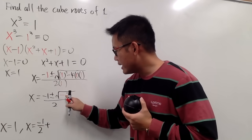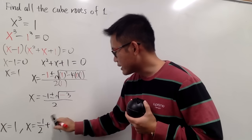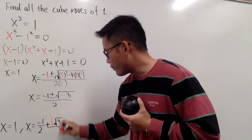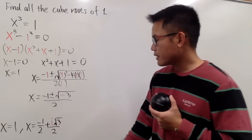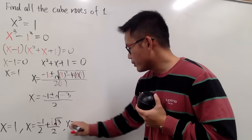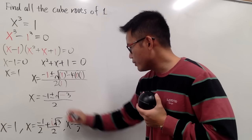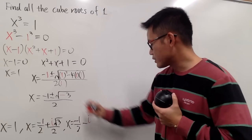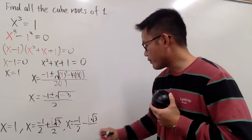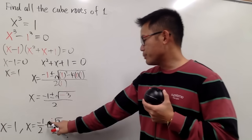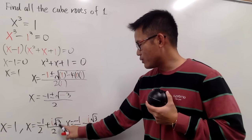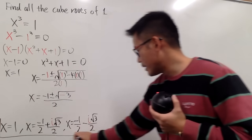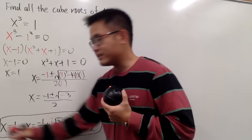The second answer is negative 1 half plus i times the square root of 3 over 2. The third answer is x equal to negative 1 over 2 minus i times the square root of 3 over 2. You can put the i here or put the i at the end — it's up to you. Anyway, here are the three answers.